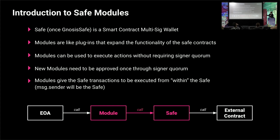The logic of the module gets executed from within the Safe, so the message sender in the external contract call will be the Safe itself. Basic diagram: you can have an EOA, which can be a hardware wallet or on a server. The EOA calls the module, the module calls the Safe, the Safe calls the smart contract — and that's how it works.